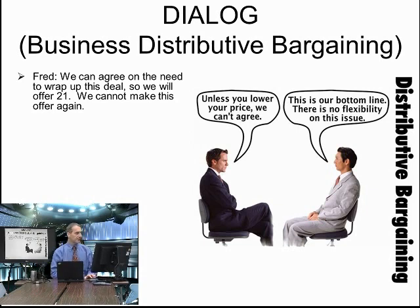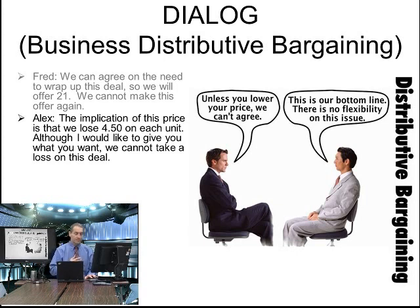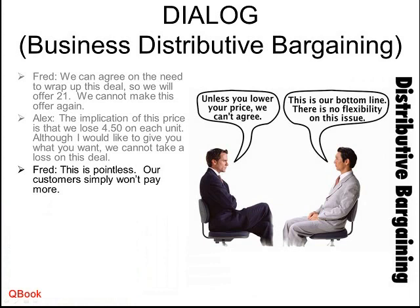Fred says they can agree on the need to wrap up the deal and offers $21, giving in a little. Alex says the implication of this price is that they lose $4.50 on each unit — although they'd like to give Fred what he wants, they cannot take a loss on this deal. Fred says this is pointless because their customers simply won't pay more. One side says if they sell so low they won't make money; the other says if they buy so high, their customers won't buy and they'll lose money too.